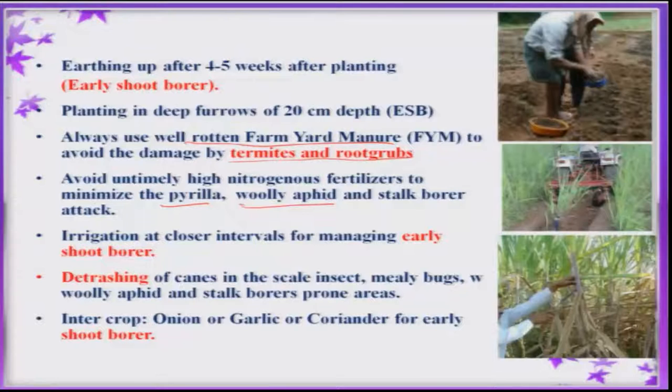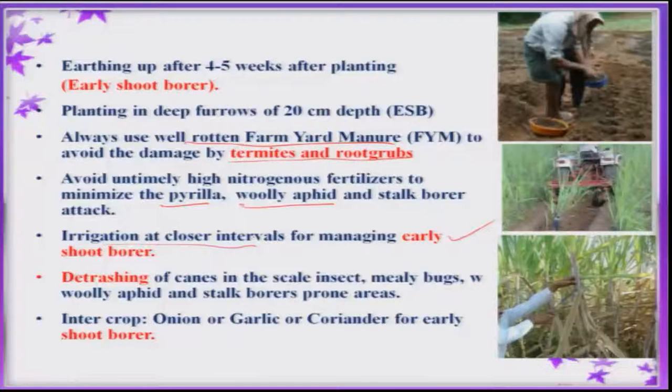For early shoot borer management, irrigate the crop at closer intervals to reduce the population. Detrashing is one important cultural practice which eliminates or reduces the population of scale insects, mealybugs, woolly aphid, and to some extent all the stalk borers.